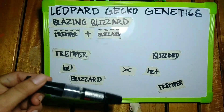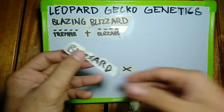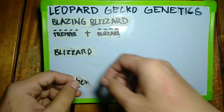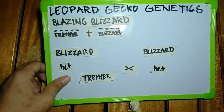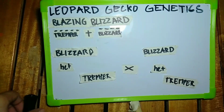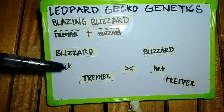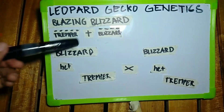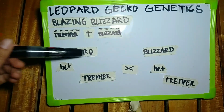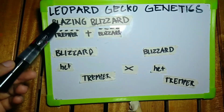For the second equation, you will need a blizzard het tremper paired with another blizzard het tremper. As you can see, both male and female have blizzard and tremper genes. It doesn't matter if you have het tremper or not, as long as the leopard gecko has the two required genes — blizzard and tremper. This time they are both visual blizzard, but the heterozygous gene is tremper. That's the second equation to produce blazing blizzard.